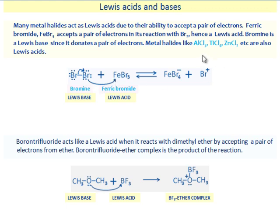Metal halides like aluminum chloride (AlCl3), titanium tetrachloride (TiCl4) and zinc chloride (ZnCl2) are also Lewis acids. Boron trifluoride acts like a Lewis acid when it reacts with dimethyl ether by accepting a pair of electrons from ether. Boron trifluoride ether complex is the product of the reaction.